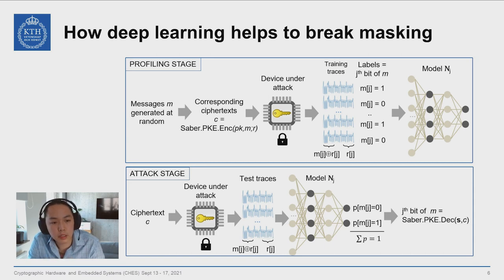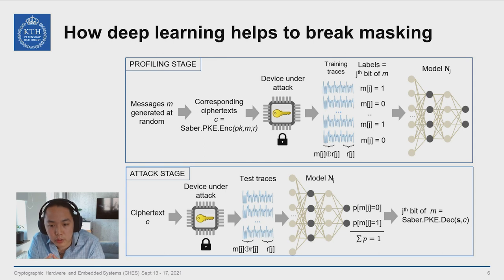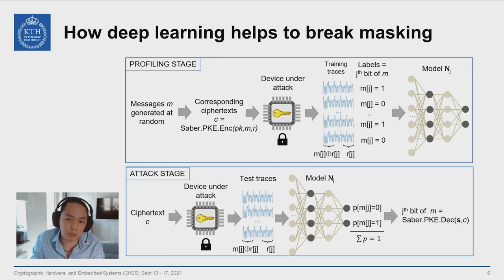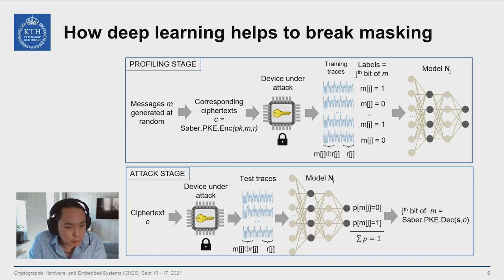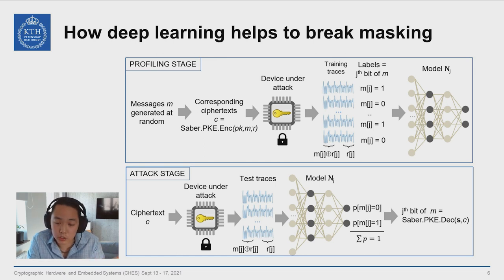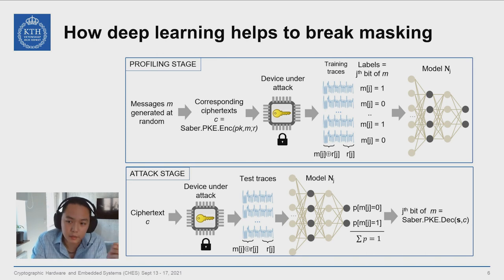Normally, with the known message bits as labels, we can train a neural network to recognize what the power trace looks like when the message is a 1 and when the message is a 0. But because the data has been randomly bit-flipped due to the random mask, what looks like a bit 1 may actually encode a bit 0, and other times 1 may actually mean a 1. We just don't know. This is the power of masking.